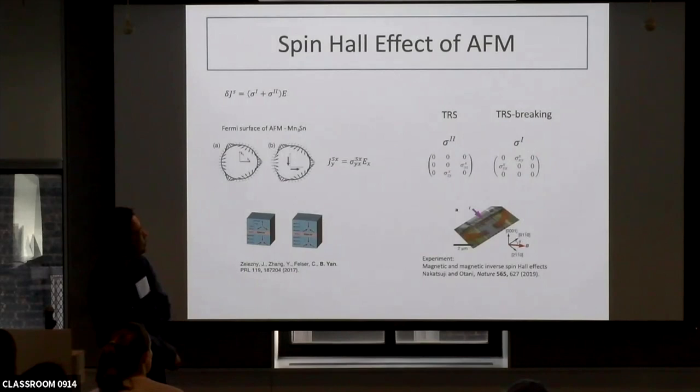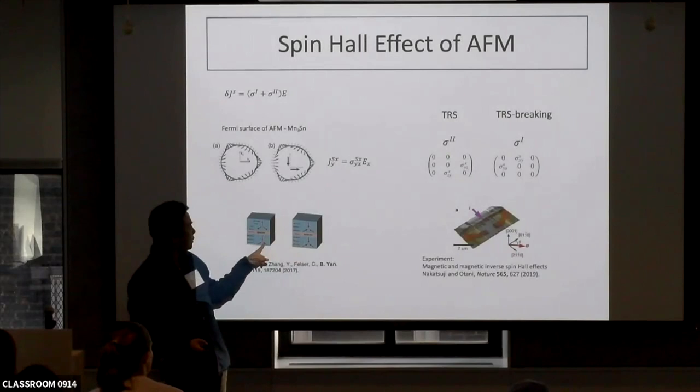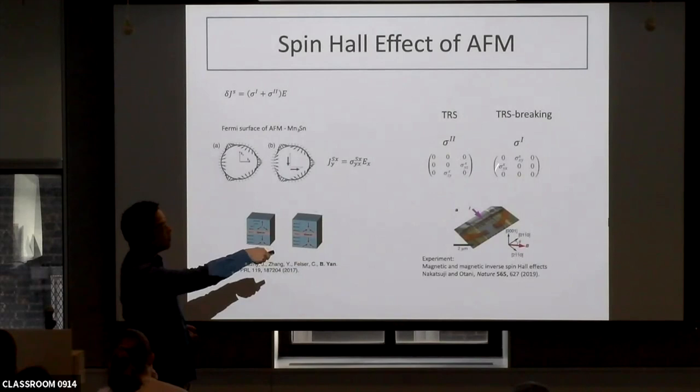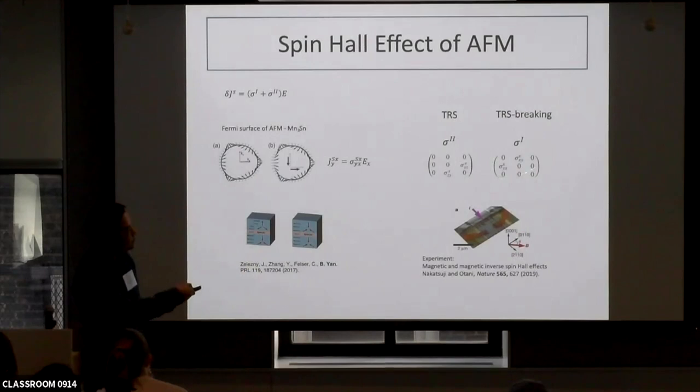Experiments can even more easily identify it. You apply a magnetic field, which kind of switches the crystal magnetic structure to another configuration. If you apply time-reversal and this part changes sign — experiments clearly show that when you reverse the magnetic field, you reverse the spin Hall conductivity. This is a clear signature that contributions come only from this time-reversal breaking term.